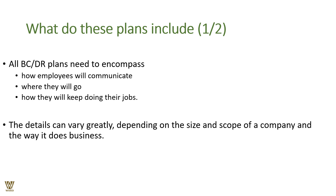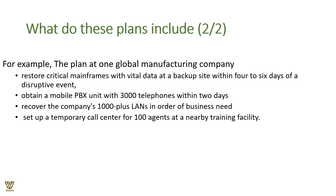We need to understand everything in minute detail — the scope, how it impacted us, and how long it will take to return to normalcy. For example, consider a global manufacturing company where something went wrong with the mainframe as a data backup. Within four to six days everything goes wrong. We manage data flow and communication by utilizing a public branch exchange with 3,000 telephone lines within two days, using mobile phones, landlines, and PBX, to ensure the company's image is not hampered and operations are normalized.